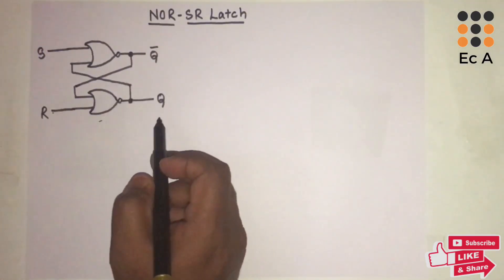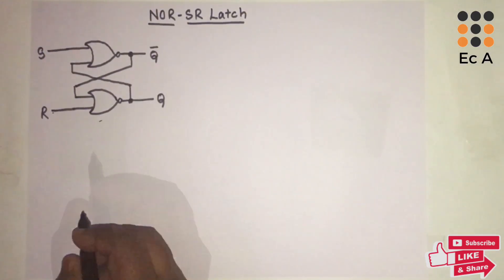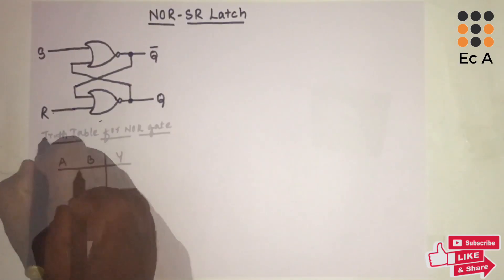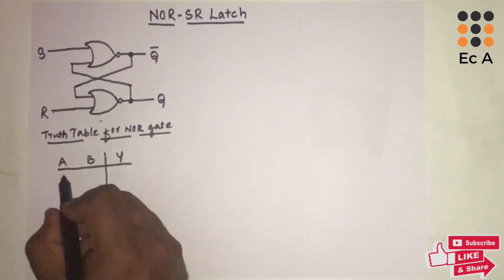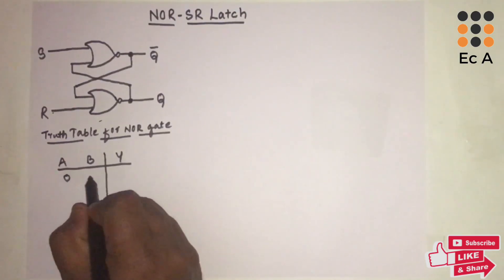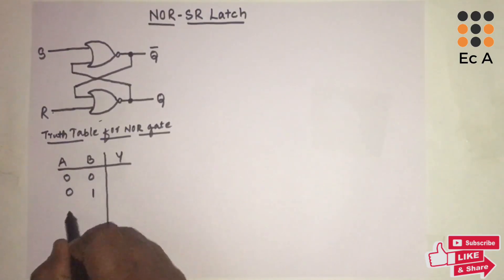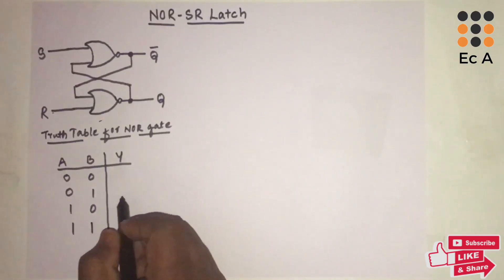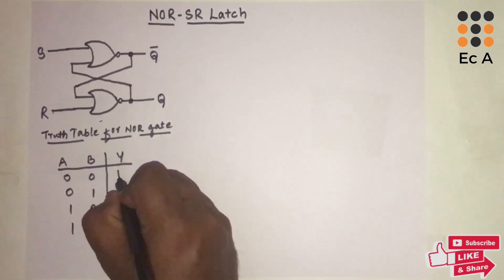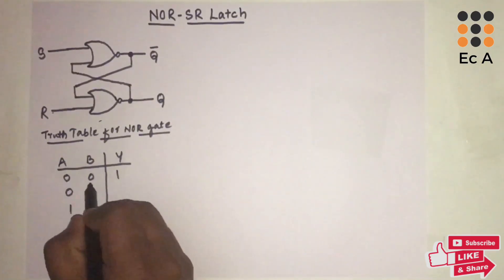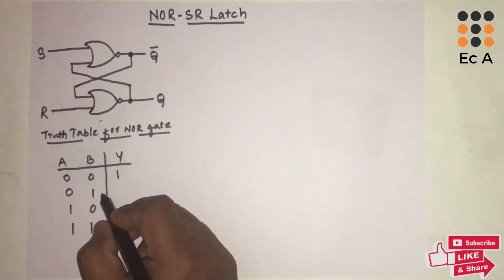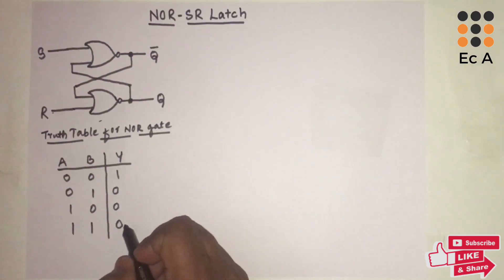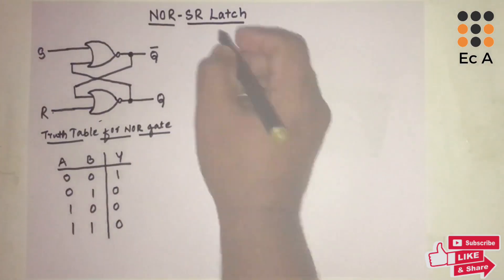Before going into the operation of the NOR SR latch, let us review the truth table for the NOR gate. For two inputs, we have four combinations: 0-0, 0-1, 1-0, and 1-1. The output is one only when both inputs are zero; for all remaining combinations the output is zero.